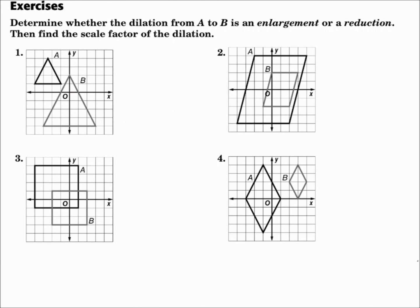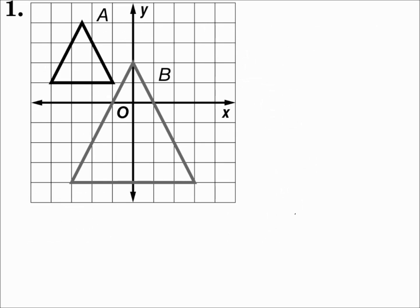Determine whether the dilation from A to B is an enlargement or a reduction, and then find the scale factor of the dilation. If you're going from A to B, then A is the old one and B is the new one, so A is the preimage and B is the image. For number 1, from A to B it got bigger, so that's an enlargement.